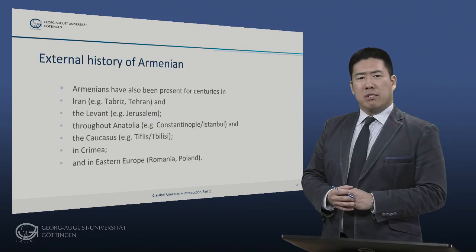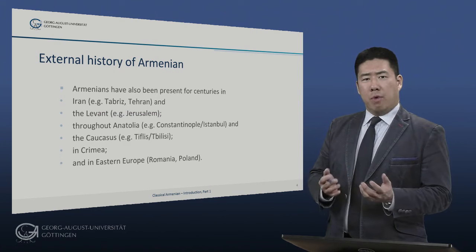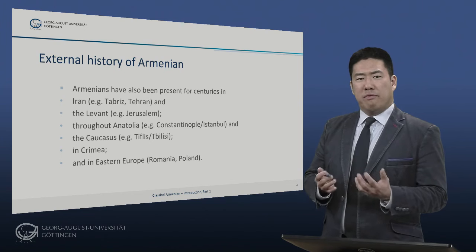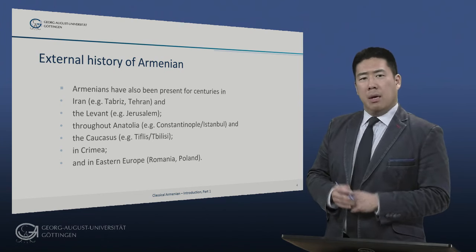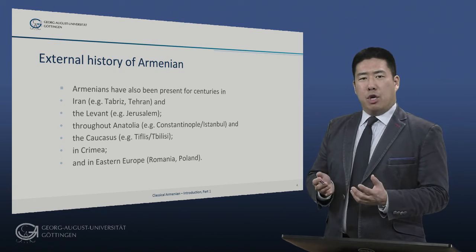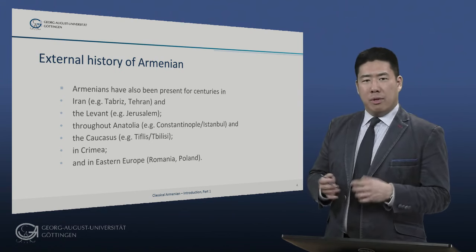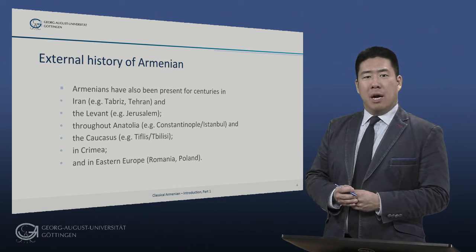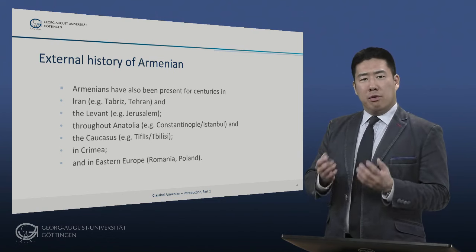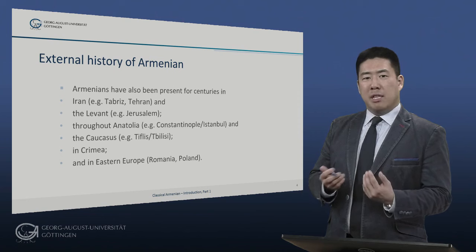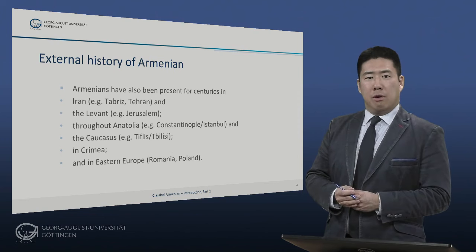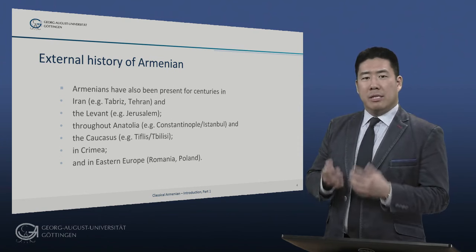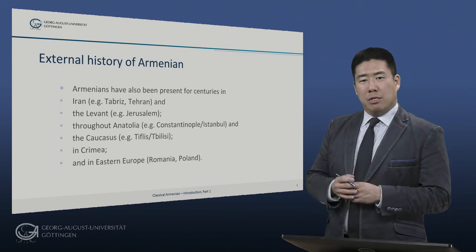Armenians have also been present for centuries in many different lands, including Iran — cities such as Tabriz and the capital Tehran — and throughout the eastern Mediterranean, most famously the Armenian quarter of Jerusalem. Armenians spread throughout Anatolia, including Constantinople, or Istanbul, which as the capital of the Ottoman Empire was one of the major centers of Armenian culture and intellectual life. Throughout the Caucasus, including Tiflis, modern Tbilisi, which was another major center of Armenian culture. In Crimea, and finally in eastern Europe, in places such as Romania and Galicia, in what is now Poland and Ukraine.